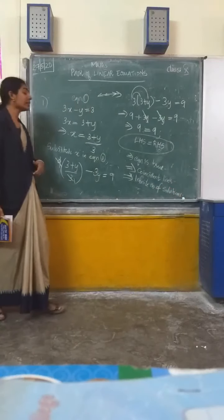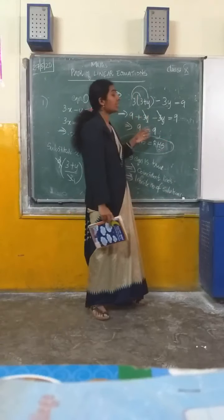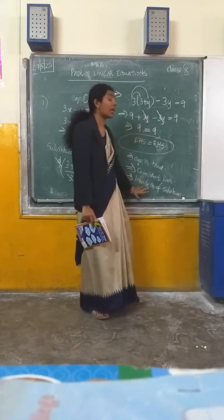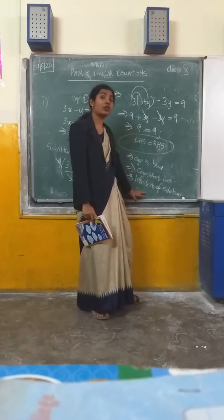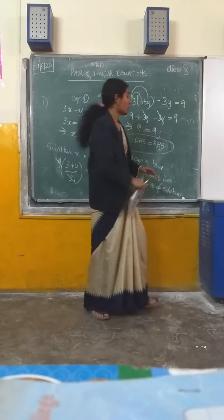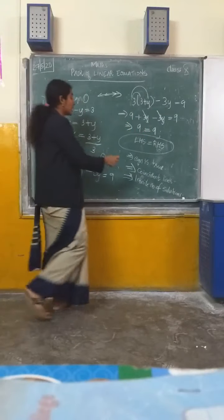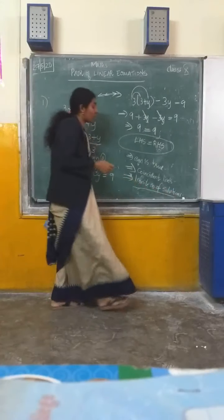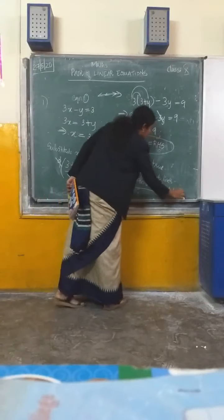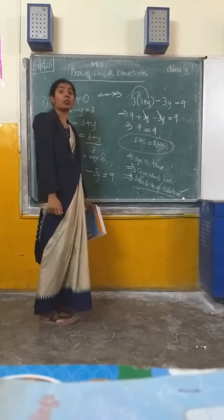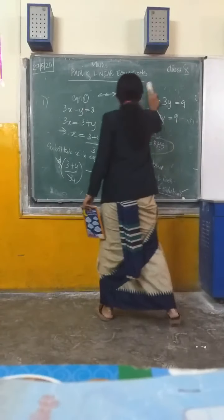For coincident lines, there will be an infinite number of solutions. So for this type of pair of linear equations it will be like this. You should write: infinite number of solutions. Even if you find at least one solution it is okay, but you should write infinite number of solutions.